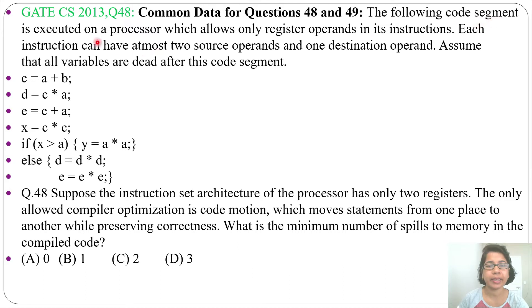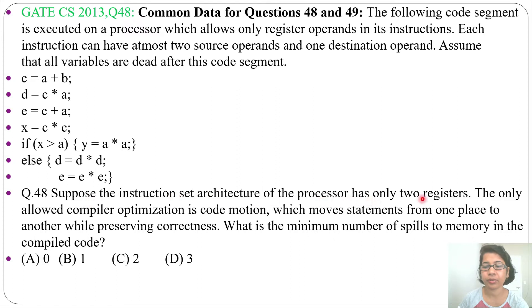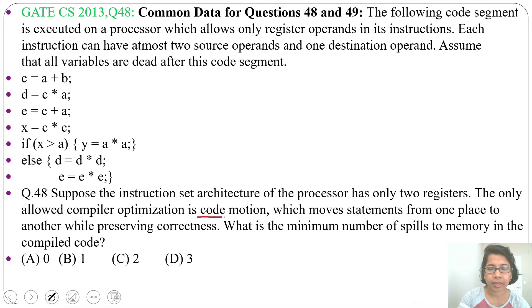The following code segment is executed on a processor which allows only register operands in its instructions. Each instruction can have at most two source operands and one destination operand. Assume all variables are dead after this code segment. For question 48, suppose the processor has only two registers. The only allowed compiler optimization is code motion, which moves statements from one place to another while preserving correctness. What is the minimum number of spills to memory in the compiled code?